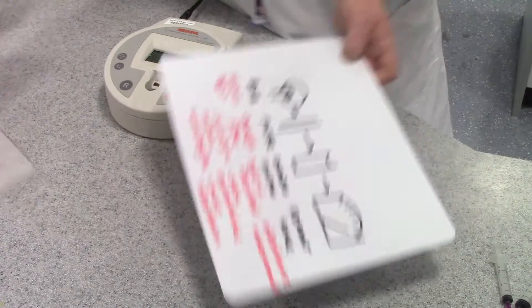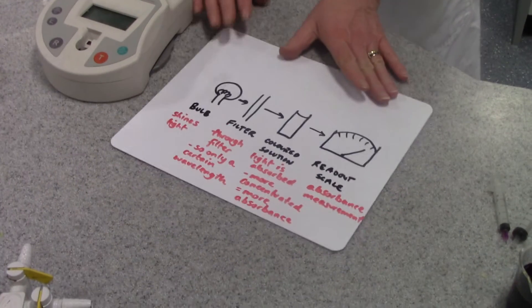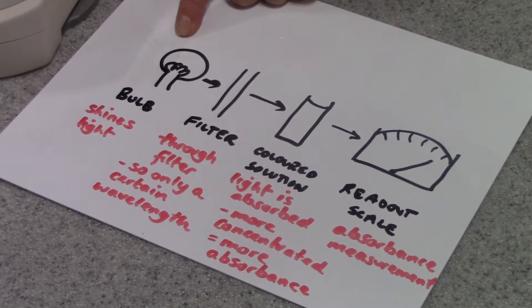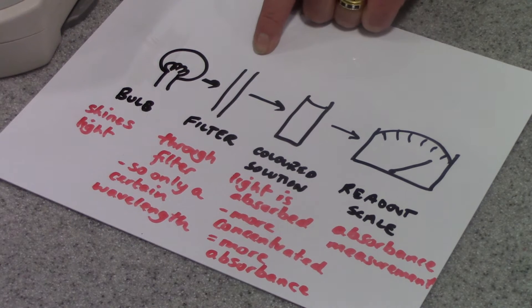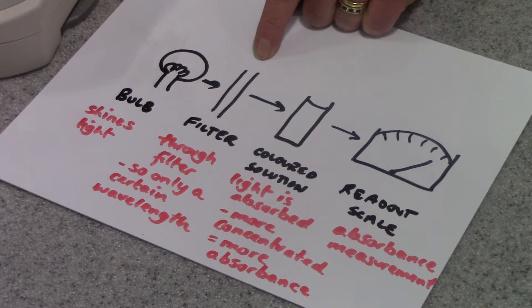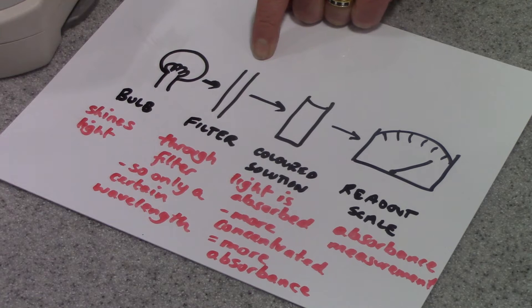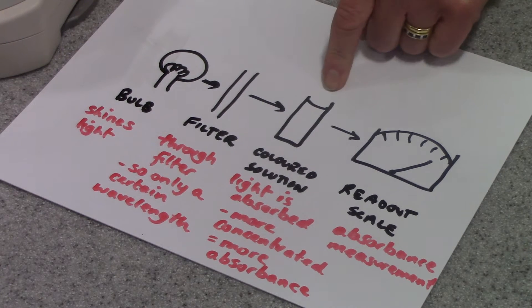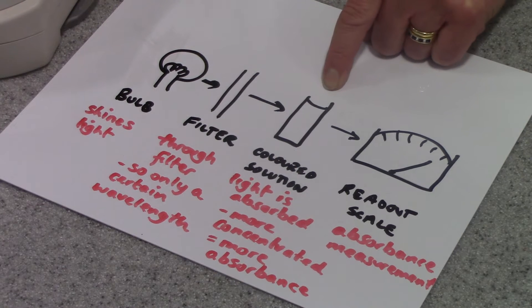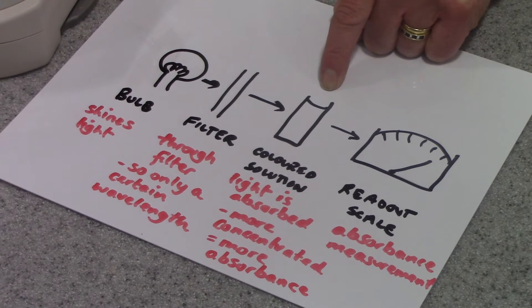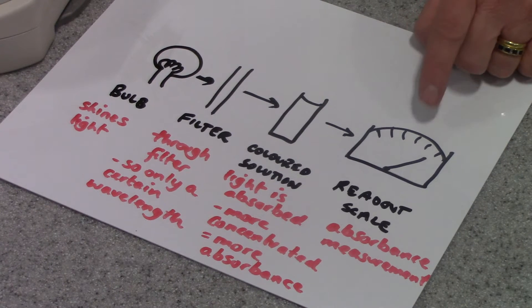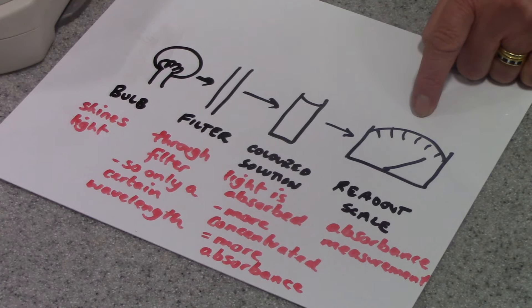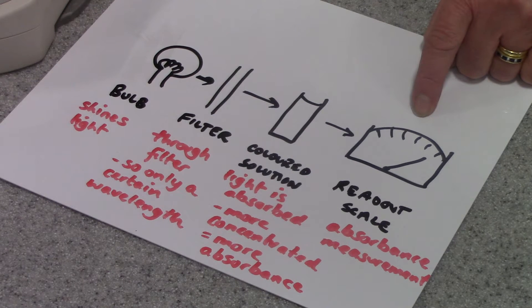If we look inside a colorimeter, we can see that there's a light bulb and this shines a light through a colored filter. This filter only allows light of a certain wavelength to pass through. The light then passes through a colored solution that you wish to determine the concentration of. And then a readout meter gives you a numerical value for the amount of light absorbed.